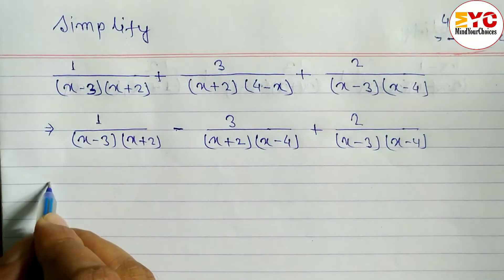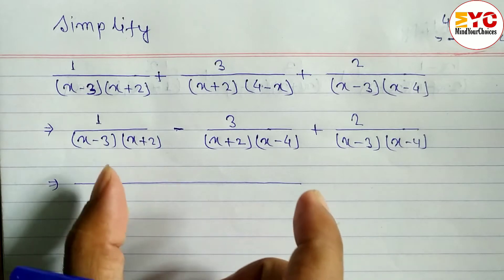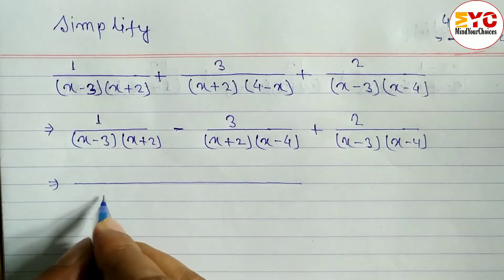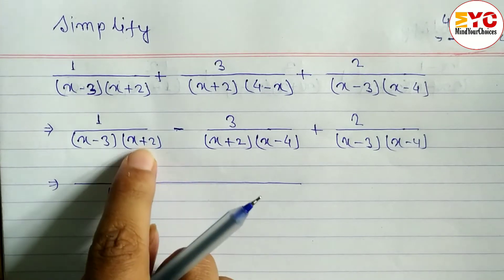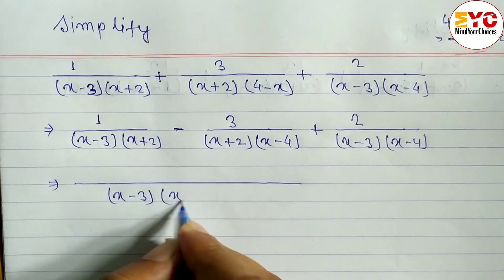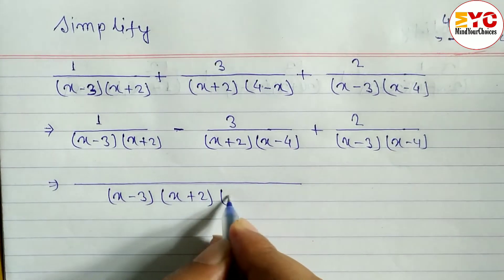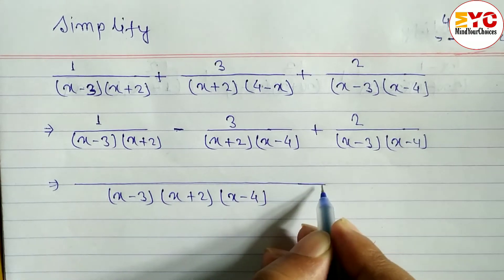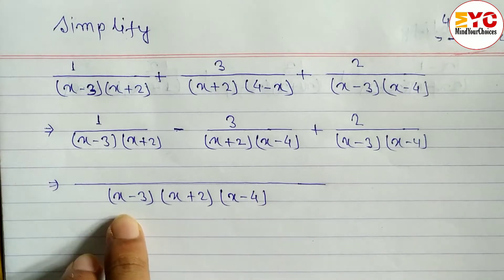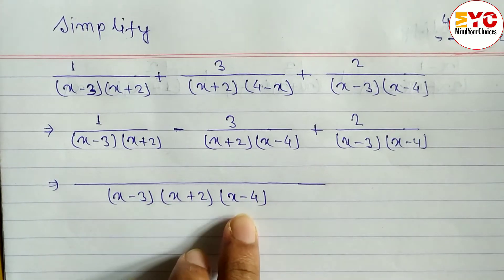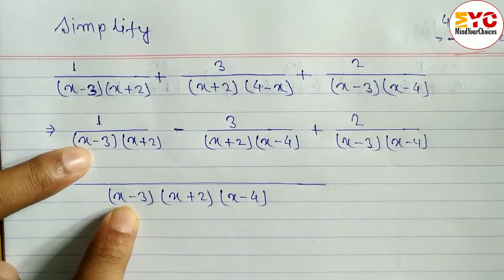After this we have to take LCM. First of all we take the common factor x minus 3 — we write x minus 3 only once. Then x plus 2 — write x plus 2. Similarly x minus 4 — write x minus 4. We don't have any remaining factors, so LCM is (x minus 3)(x plus 2)(x minus 4).